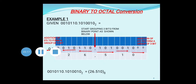The next step is to represent each 3-bit group into its equivalent octal number. From the 3-bit binary table: 110 corresponds to 6, 010 corresponds to 2, and 000 corresponds to 0. On the fractional side: 101 corresponds to 5, 001 corresponds to 1, and 000 corresponds to 0. Therefore, the final equivalent octal number is 026.510.